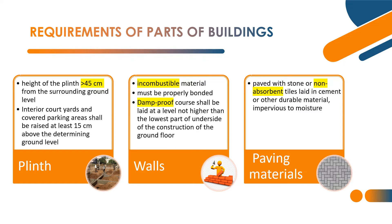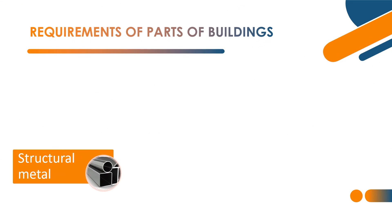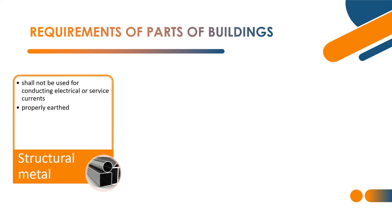Next part of the building is structural metal. Structural metal shall not be used for conducting electrical or service currents — like electric conductivity. The structural metal should be properly erected to prevent shocking from thunderstorms, which can cause voltage shock. This is for safety purposes.